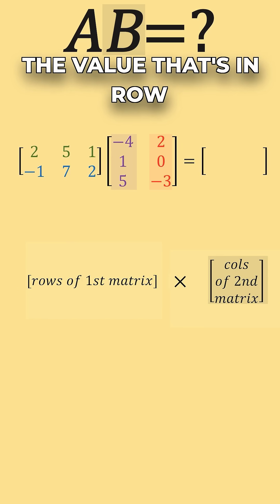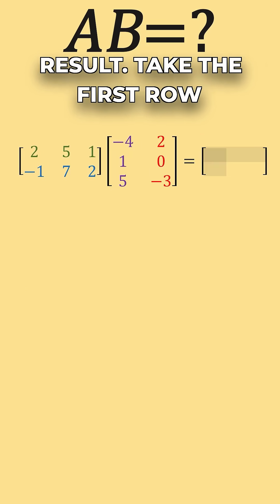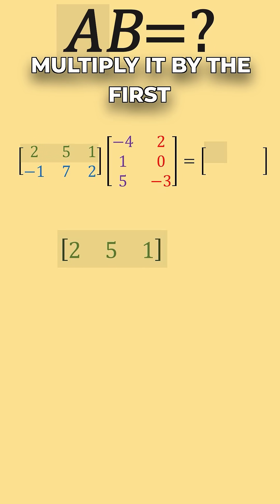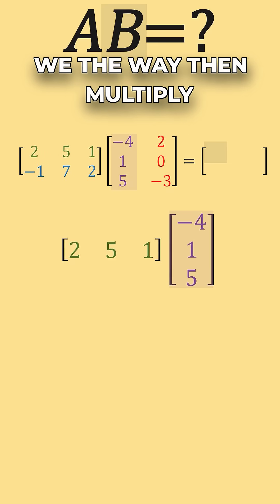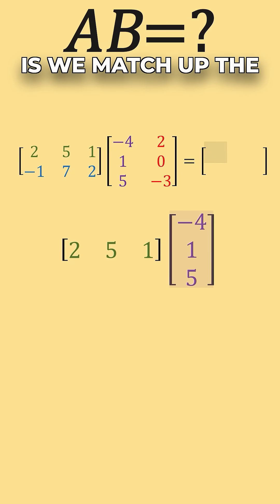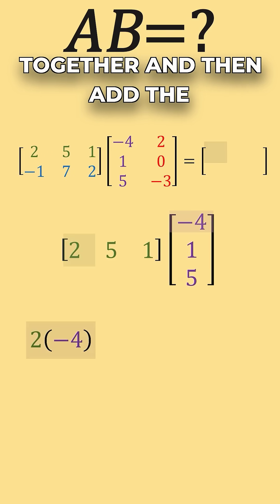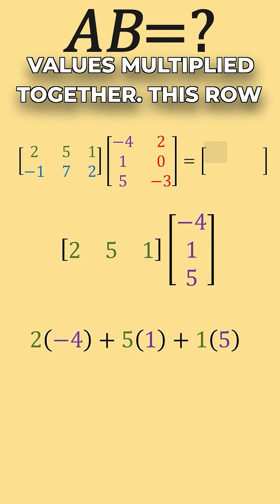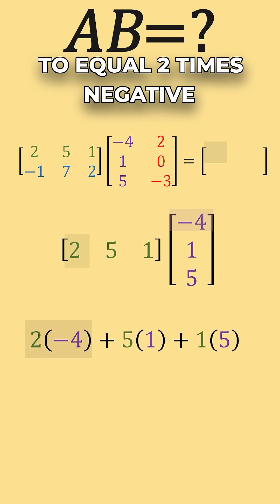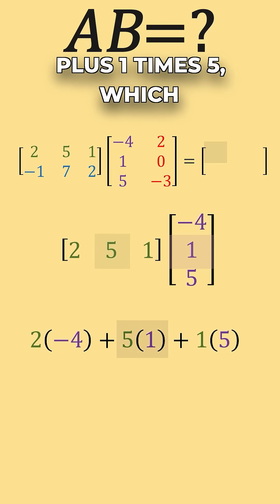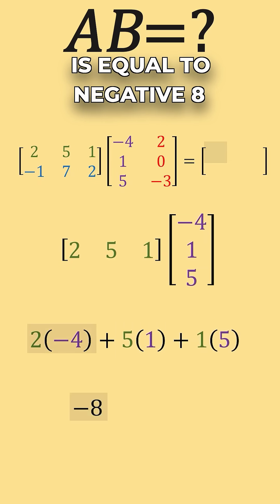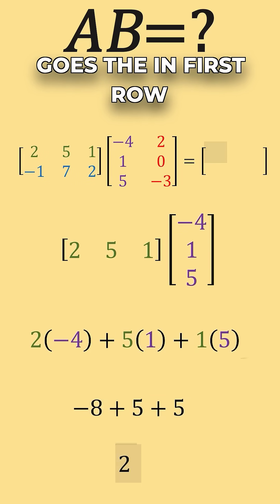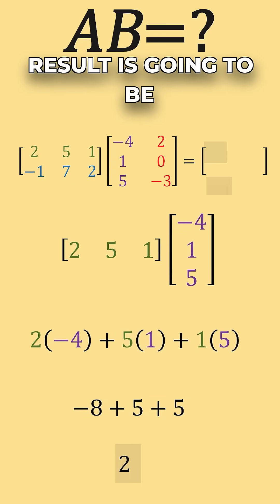To find the value in row 1, column 1 of our result, we take the first row in matrix A and multiply it by the first column in matrix B. We match up the first values and multiply them together, then add the second values multiplied together, then add the third values multiplied together. This gives us 2 times negative 4 plus 5 times 1 plus 1 times 5, which equals negative 8 plus 5 plus 5, which equals 2. So the value in row 1, column 1 of our result is 2.